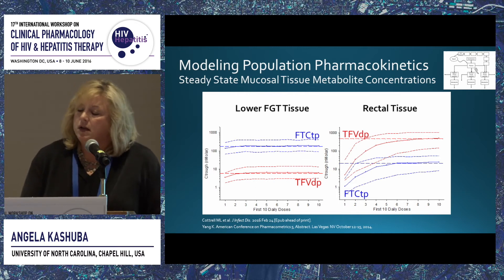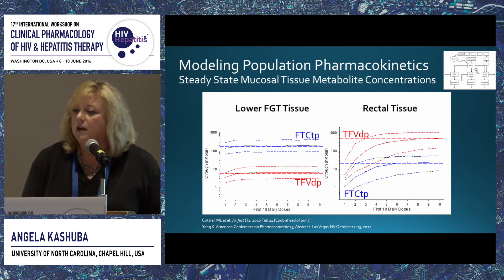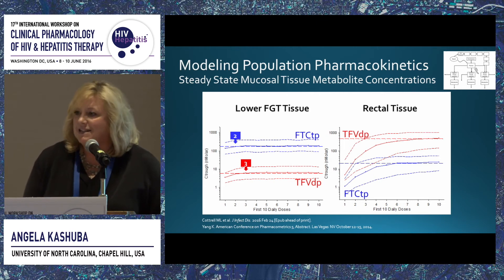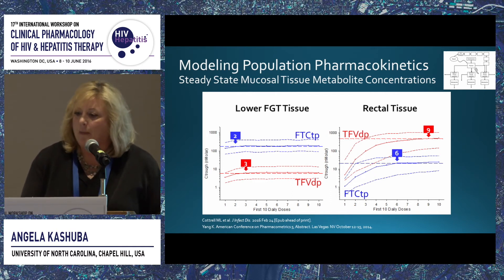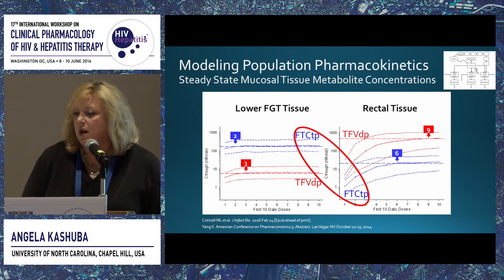We generated a model to predict tenofovir diphosphate and FTC triphosphate concentrations in mucosal tissues with varying doses. After the first ten doses of Truvada, steady-state trough concentrations in lower female genital tract tissue are achieved within about two to three doses, whereas steady state in rectal tissue requires about six to nine doses. Rectal tissue concentrations of tenofovir diphosphate are much higher than in female genital tract, with the opposite pattern for FTC triphosphate.